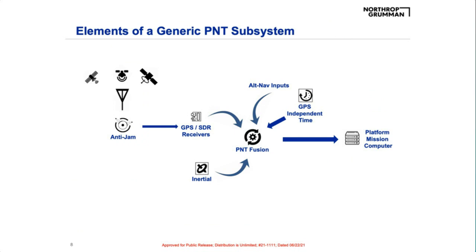Shifting gears, let's look at what makes up a complete modern PNT system. This model is agnostic towards the platform and should apply to any PNT architecture — from missiles to ground to aircraft. Think of each element as a node that can be turned from zero to 100%. It starts with signals in space from one or more constellations, going through an antenna into an anti-jam system, then into a GPS or GNSS receiver. The processed data flows into a PNT fusion engine where it's merged with inertial data from an IMU, along with a GPS-independent time source and alternate inputs, and the fusion engine outputs the best possible solution.